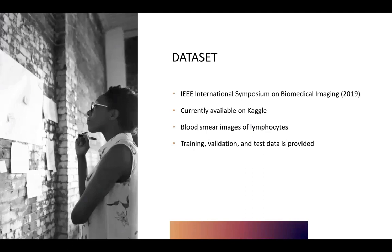Our dataset originates from the IEEE International Symposium on Biomedical Imaging's 2019 Conference Challenge. It is currently available on CACL and consists of blood smear images of lymphocytes. Training, validation, and test data is provided.